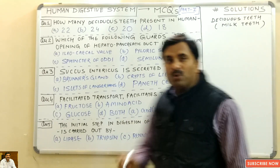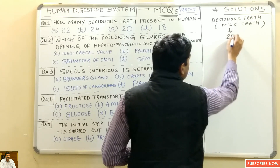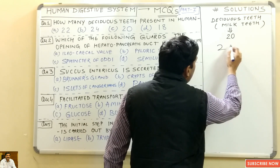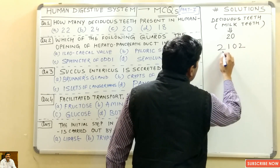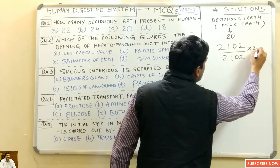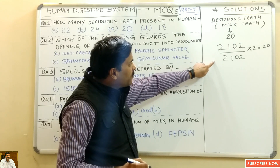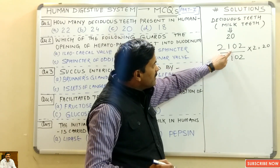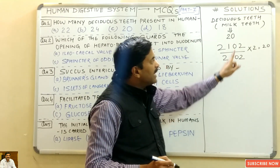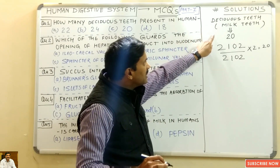Deciduous teeth means milk teeth, and the number of milk teeth is always 20. The dental formula for infants is written as: 2 1 0 2 / 2 1 0 2 × 2 = 20. This gives one half of the upper jaw and one half of the lower jaw: 2+1+0+2 = 5, times 2 jaws = 10, times 2 sides = 20.